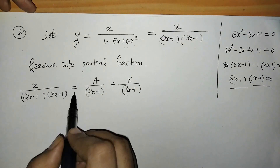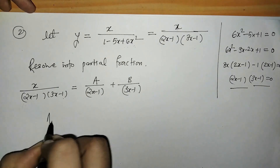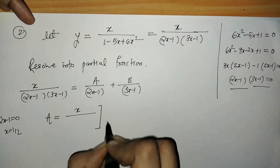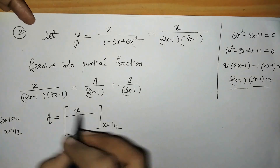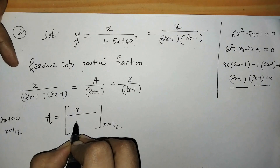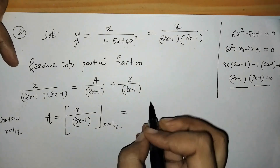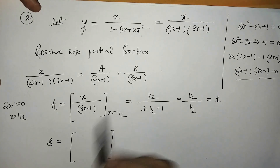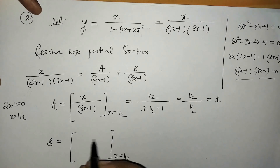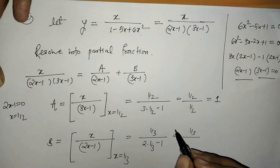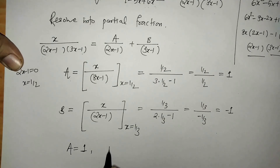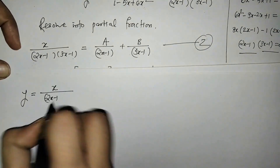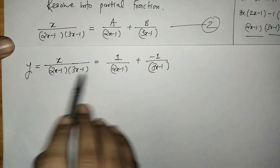These are two linear factors, so we take two constants a and b. For finding a we put 2x − 1 = 0, that means x = 1/2, on the right side avoiding this factor. We have x/(3x−1) and put x = 1/2. We get a = 1. In the same manner, for finding b we put x = 1/3 and we get b = −1. Putting the values of a and b, we obtain the given rational function in partial fraction form.